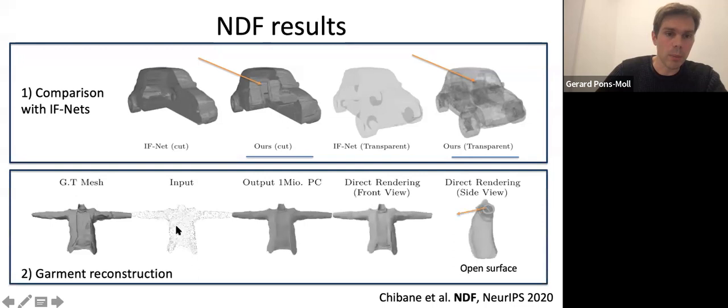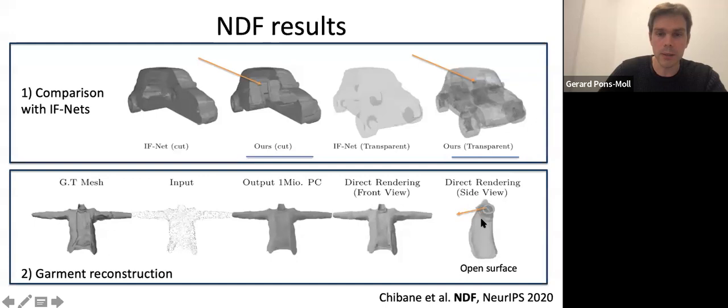We can also represent open surfaces, like a garment. Given a point cloud, we reconstruct a dense point cloud as output, and notice that we can reconstruct the mesh — which is not a closed mesh, but has holes in it. So we end up with a representation that is much more generic, and the class of shapes we can represent is much, much broader.